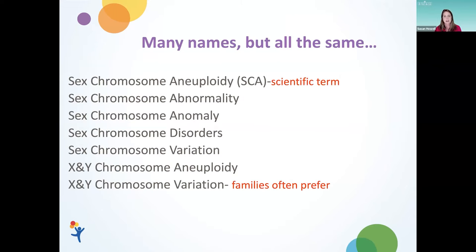There are a lot of different names for sex chromosome aneuploidies, but they all relatively mean the same thing. In the medical literature, the most commonly used term is sex chromosome aneuploidy, or SCA, but we also use terms like abnormality, anomaly, disorder, and variations. A more specific term is X and Y chromosome aneuploidy, or X and Y chromosome variations, which families often prefer when talking about these collective conditions.